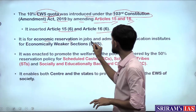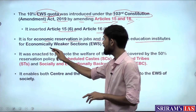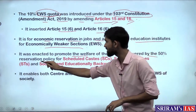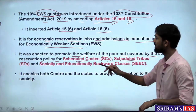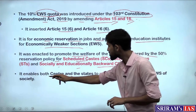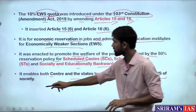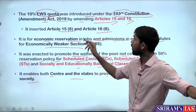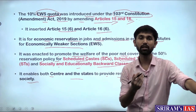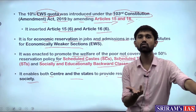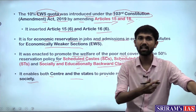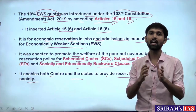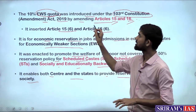This was additional reservation for economic reservation in jobs and admissions in educational institutes for the economically weaker section. It was enacted to promote the welfare of the poor not covered by the 50% reservation policy for SC, ST, and socially and educationally backward classes, and enables both the centre and states to provide such reservation. However, this amendment met with protests and objections — the grounds for granting reservations on economic basis were questioned, and the Supreme Court also raised questions about the methodology for deciding which class of people qualify as the EWS category.